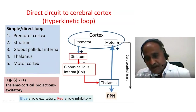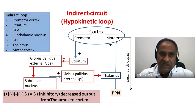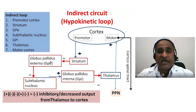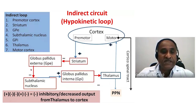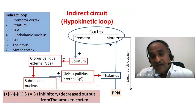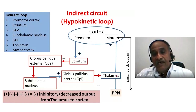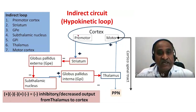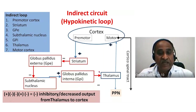The indirect circuit or hypokinetic loop: from the premotor cortex, excitatory inputs reach the striatum. The striatum sends information to the globus pallidus externa, which communicates to the subthalamic nucleus. The subthalamic nucleus in turn communicates to the globus pallidus interna, which talks to the thalamus, and from the thalamus to the motor cortex. The sign sequence is: plus, minus, minus, plus, minus, plus, minus, plus, minus.